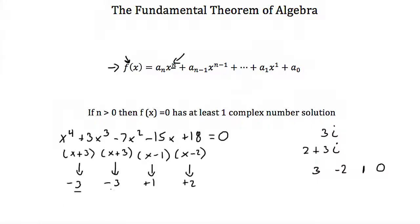Notice these two repeat, so really we only have three distinct solutions: 1, 2, and negative 3. But because this was to the fourth power, we have four factors. So you can think of this negative 3 as almost two solutions, or a repeating solution.